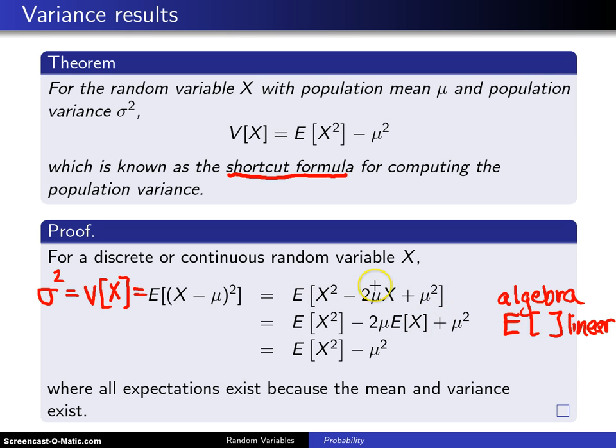Finally this last piece is the expected value of μ², but μ² is just a constant, and since the expected value of a constant is a constant, this just becomes μ².